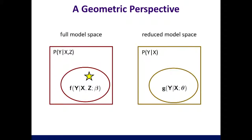Our view is that there is a true parameter generating the true probability distribution of the data, and if you project it to the reduced model space, that gives a corresponding true probability distribution in that reduced model space. When you project from the full space to the reduced space, that probability may not belong to the parametric family considered, but that's still okay. There is a nice theory for what maximum likelihood estimation does under misspecification: the parameter estimate minimizes the distance between that space and the true projected distribution. This means you can express all this geometry as a mathematical constraint on the parameters of the full model.